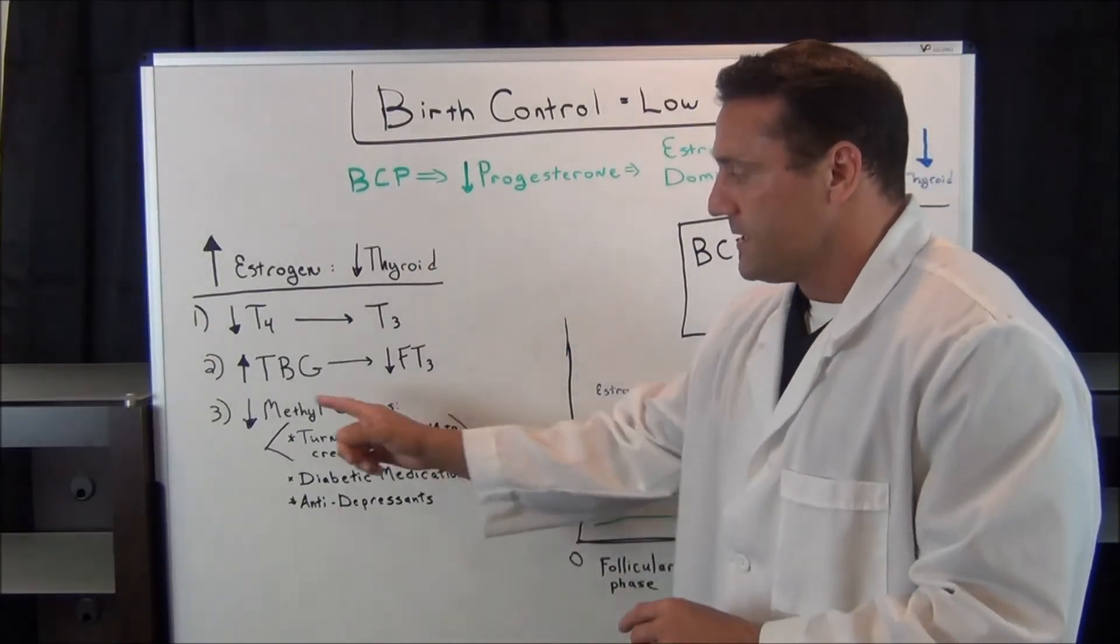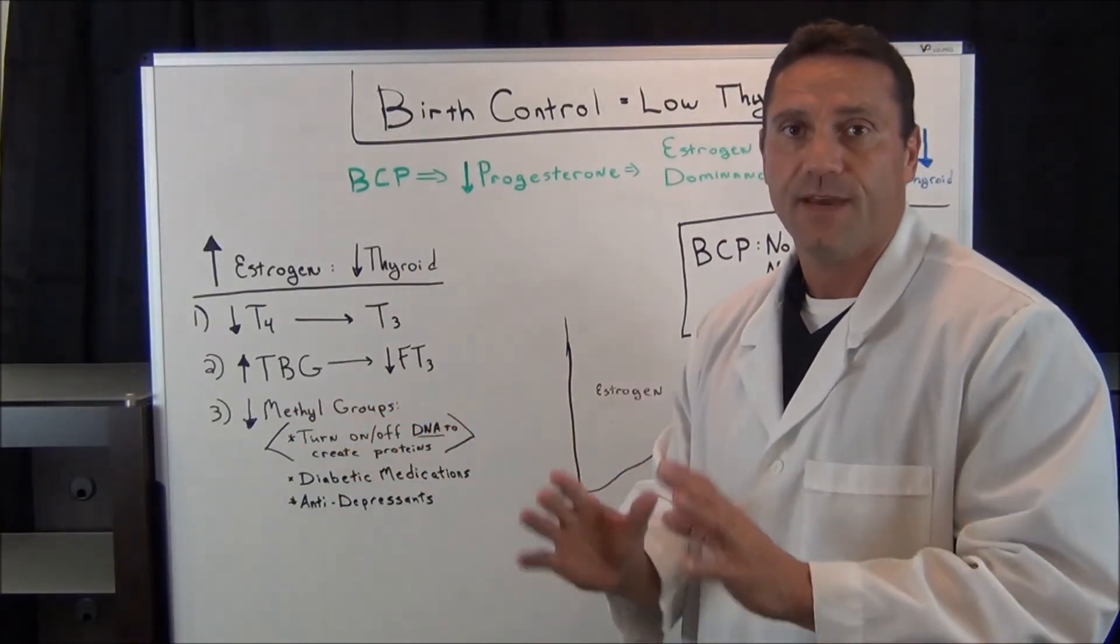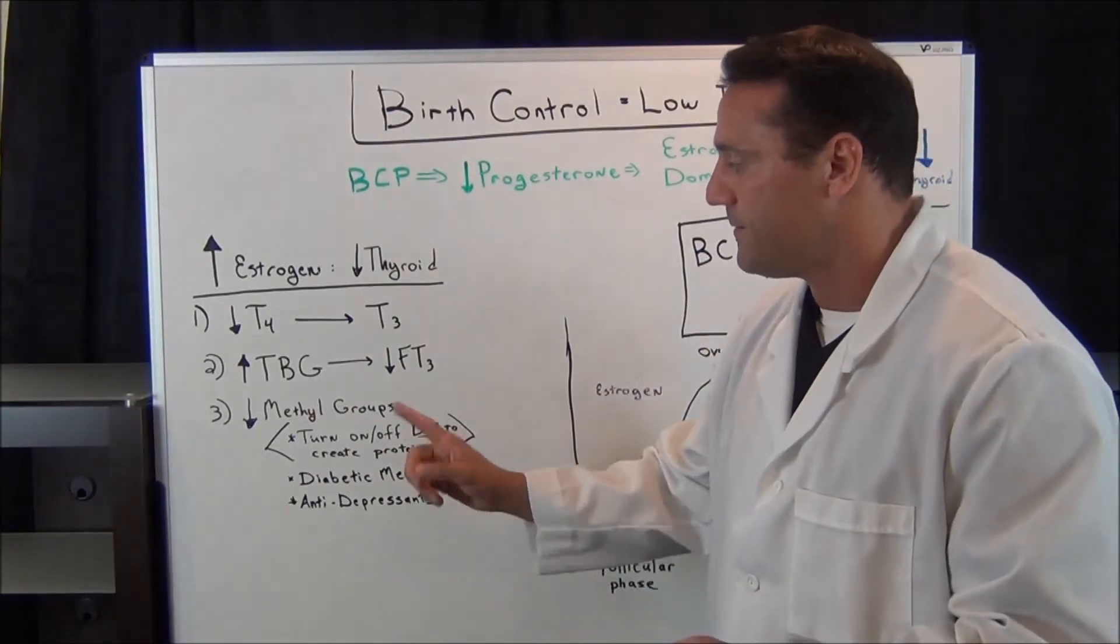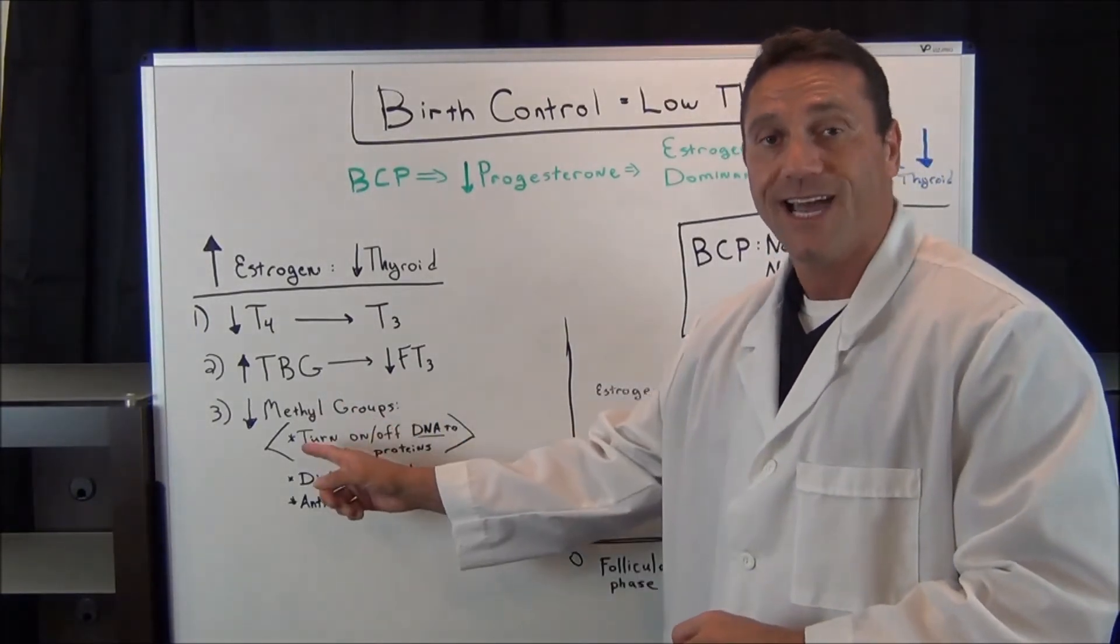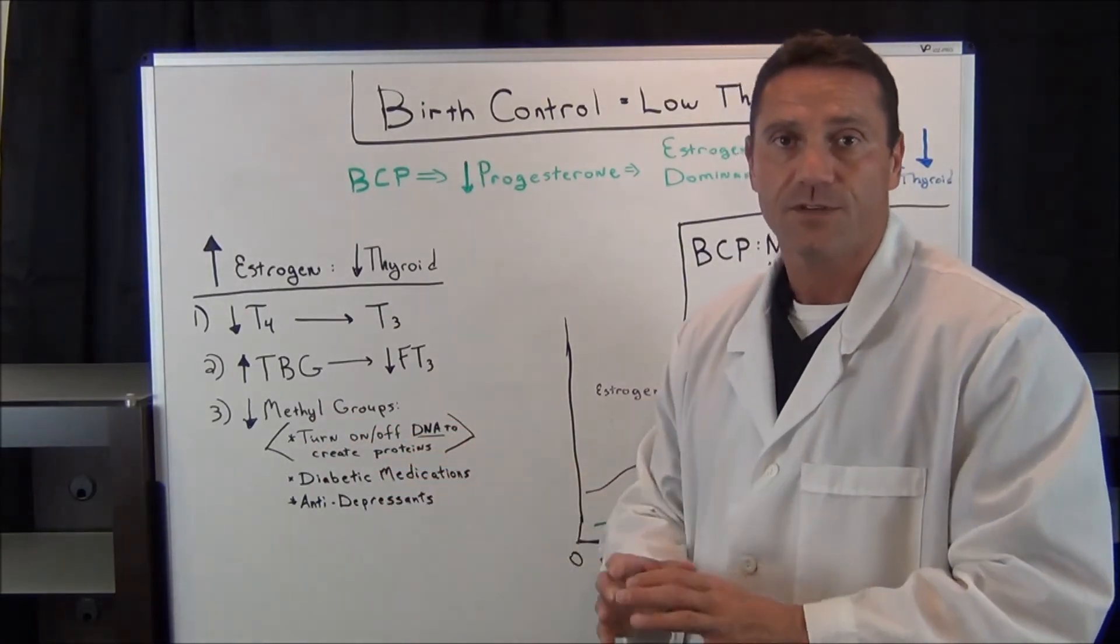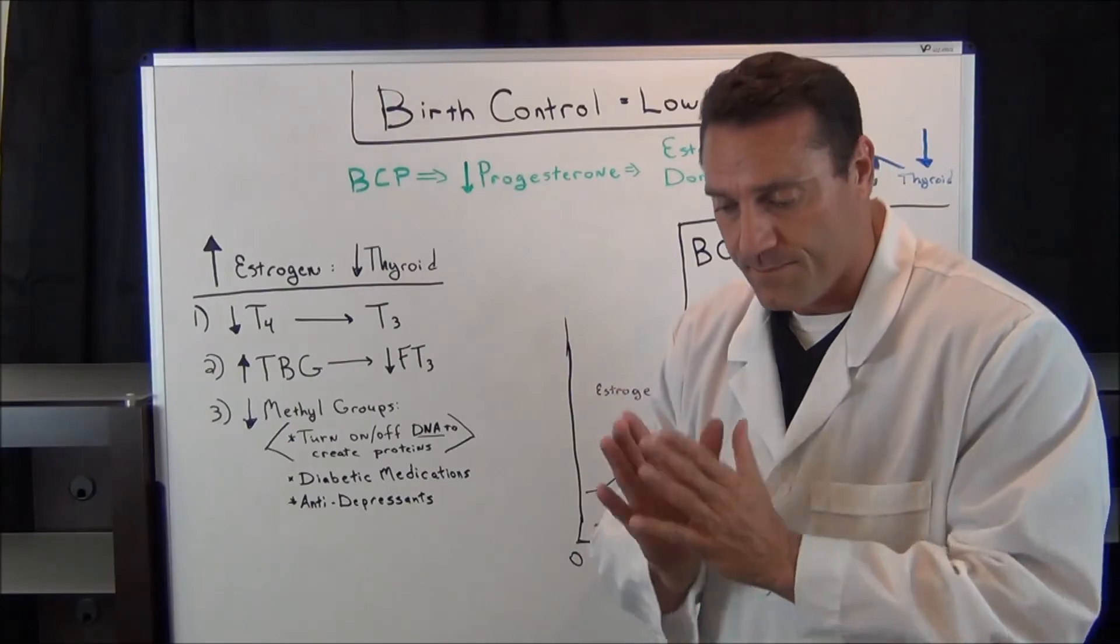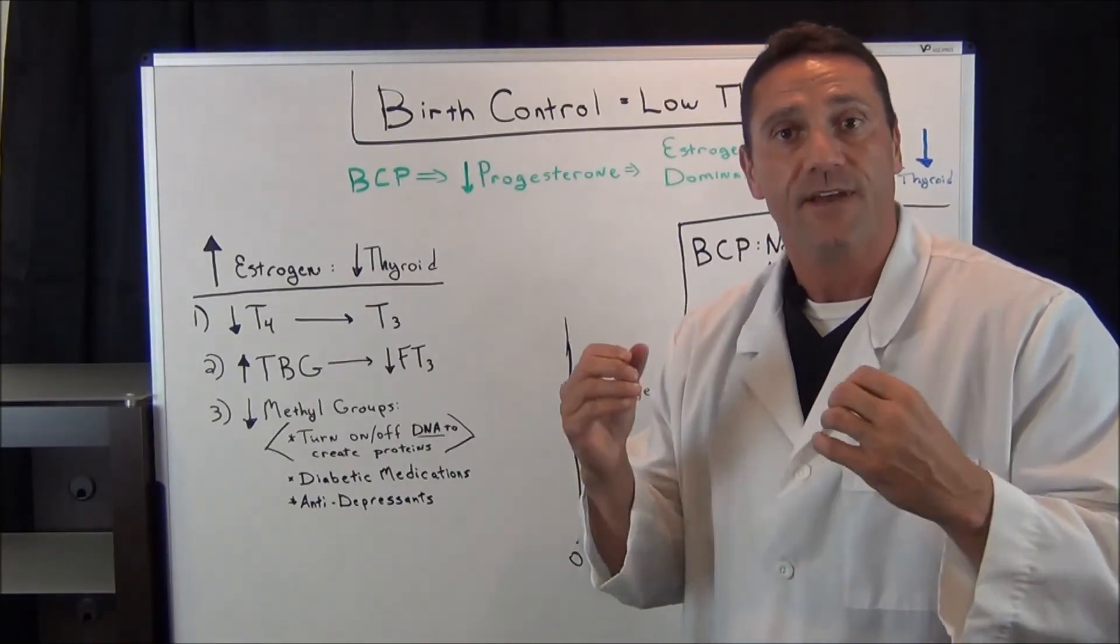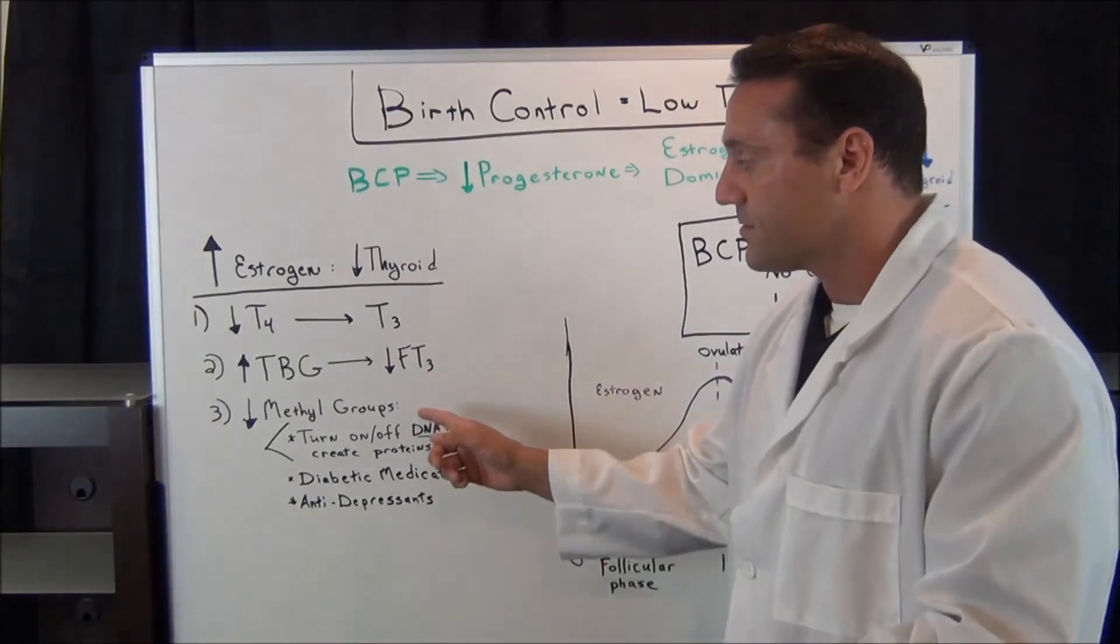Three, decreased methyl groups. Now methyl groups, that's a different explanation altogether. In a nutshell, what methyl groups do, they turn on and off the DNA which creates the proteins. So we're talking about at the cellular level, at the basic cellular level inside your nucleus. There's a nucleus inside of every cell in your body and the methyl groups are needed.